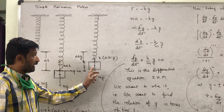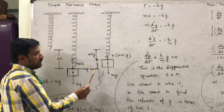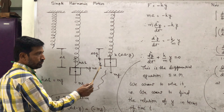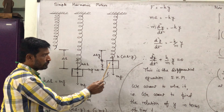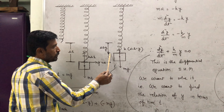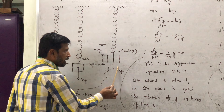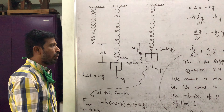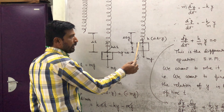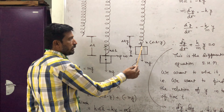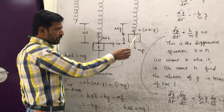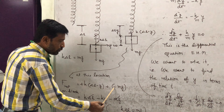At a certain instant we take a photograph. Suppose at that instant the block is at a distance y upward from y = 0 and may be moving. The total extension of the spring at equilibrium was δl, so at this location the extension is δl minus y, because the block has moved up by y. The spring force on the block is in the upward direction having magnitude k(δl − y), and mg is always downward.